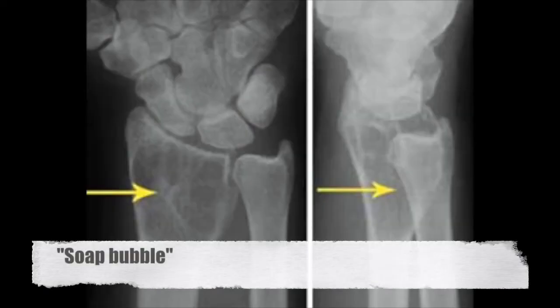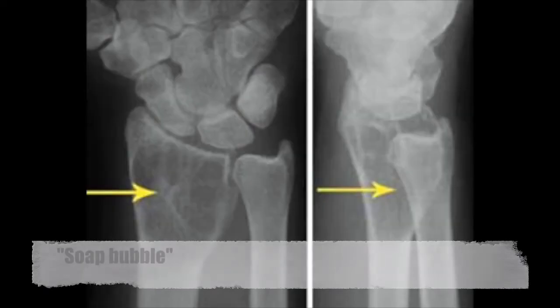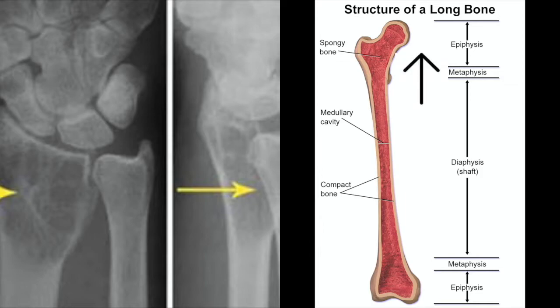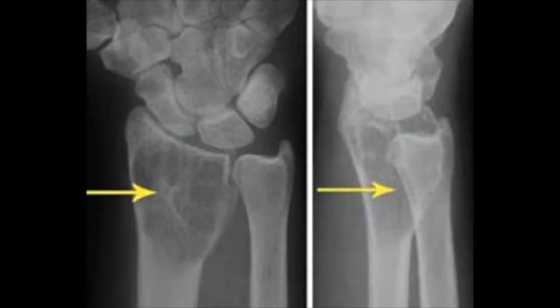On x-ray, you'll see something called the soap bubble appearance. This is the diaphysis, this is the metaphysis, and up here is the epiphysis. You get the tumor growing, and in response to the tumor, you get a little bit of reactive bone formation circling the tumor, and a bunch of these little areas of bone reacting against the tumor form, producing bubbles that look like soap bubbles in the epiphysis. So soap bubbles in the epiphysis is giant cell tumor of bone.